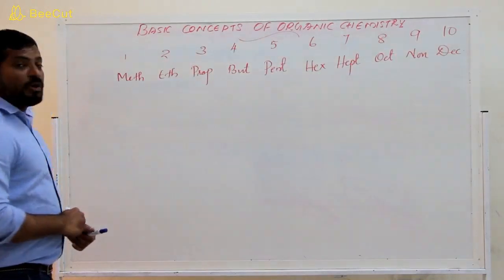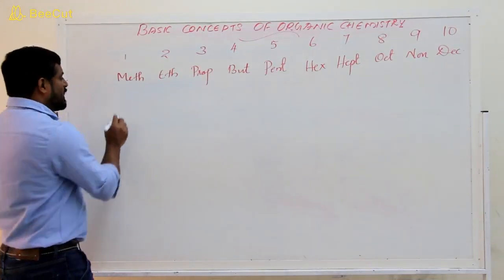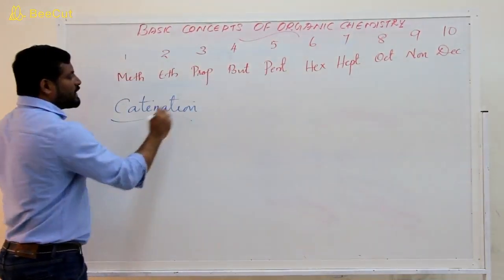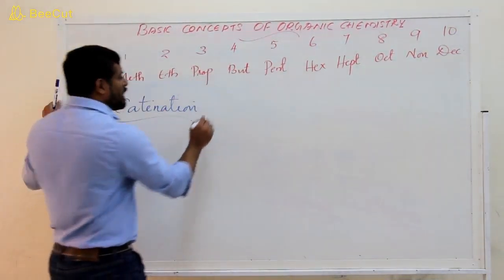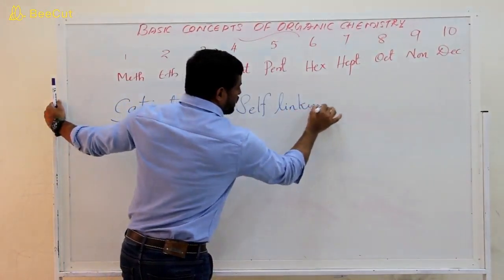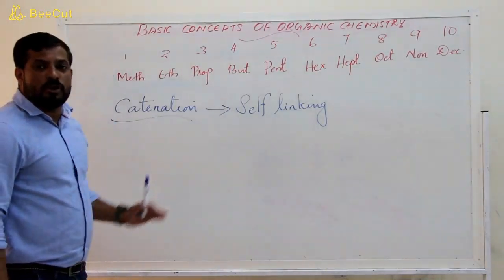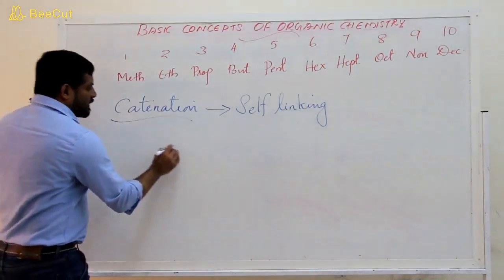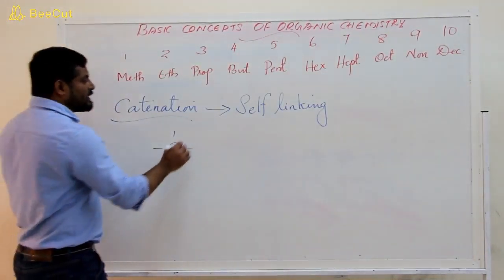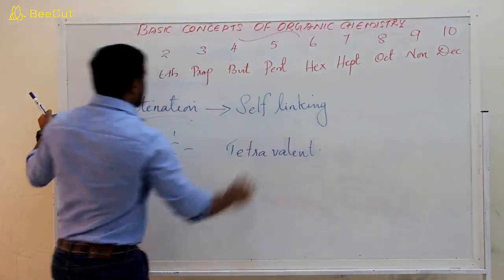First of all, we want to know about certain properties of carbon. Carbon has a special property that is called catenation. Catenation means the property of the carbon element where carbon combines with another carbon to form long chain compounds. Carbon possesses four valences, so carbon is termed as tetravalent carbon.